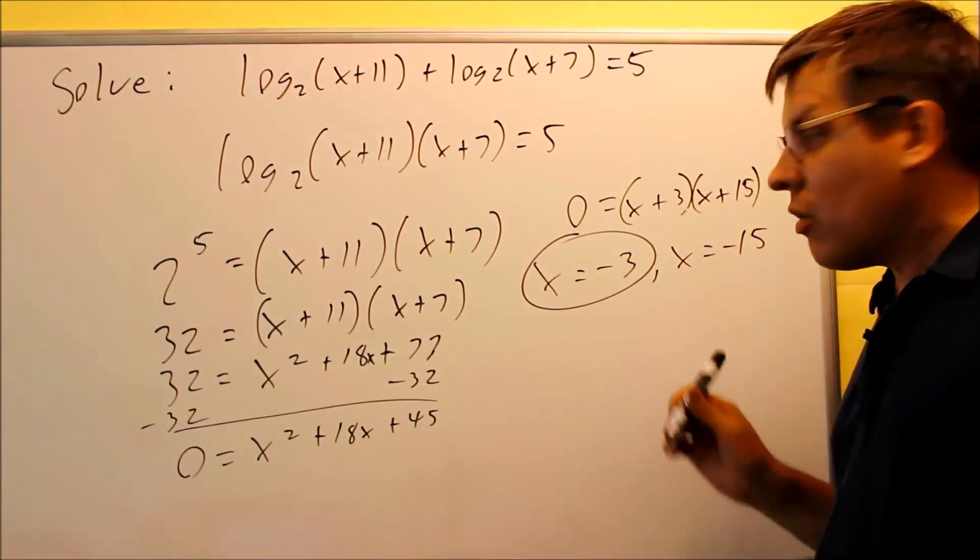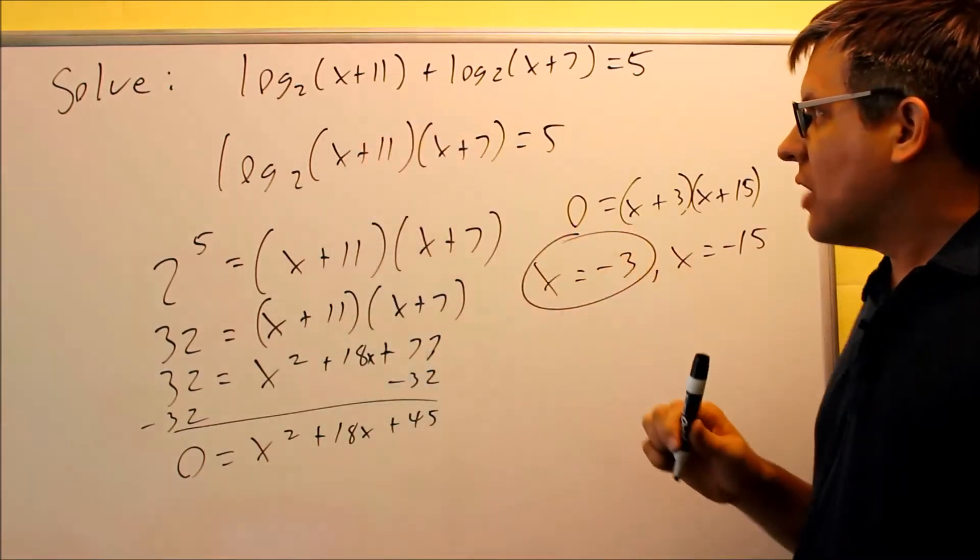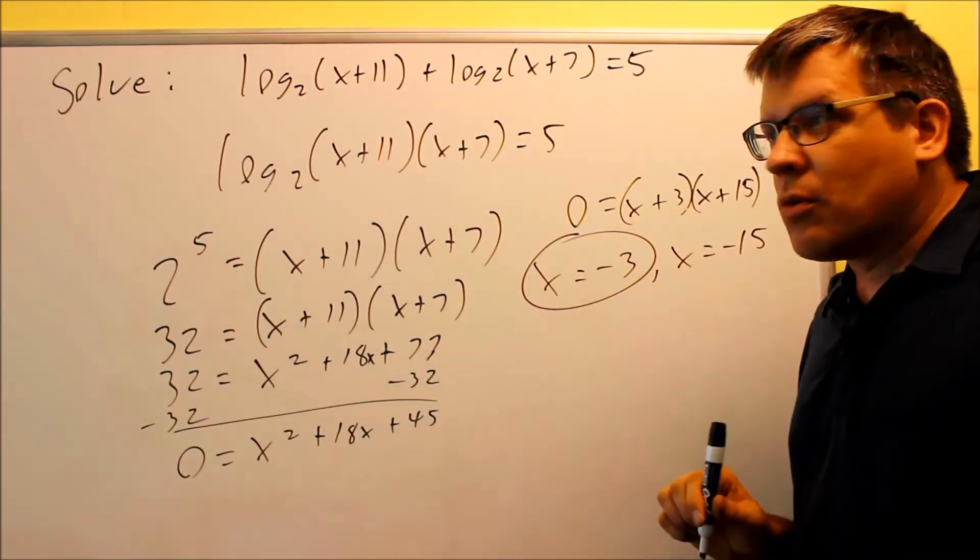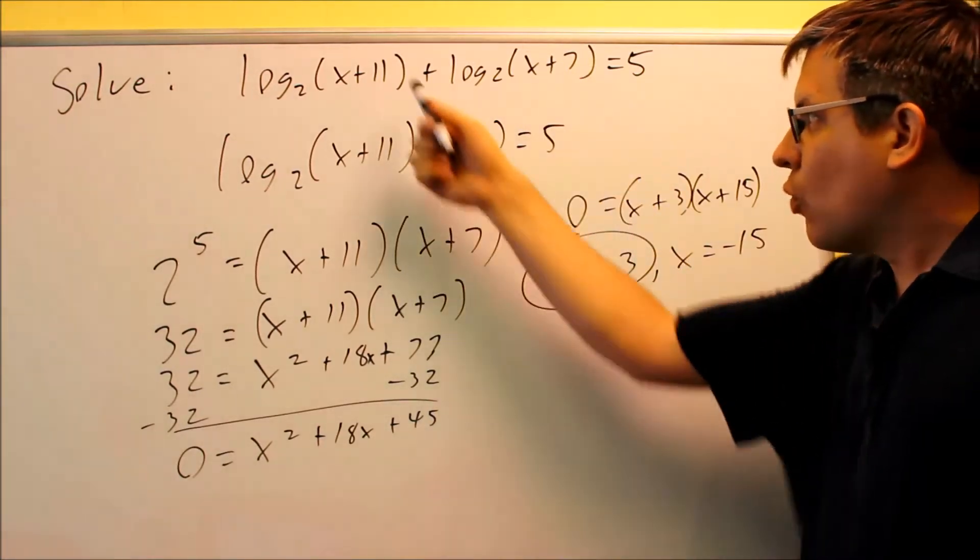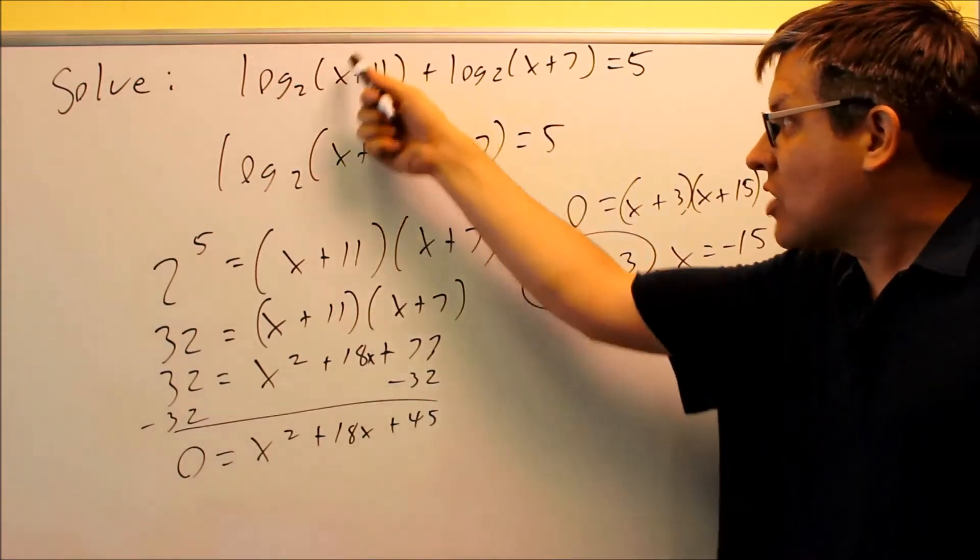We've got to check the second one as well. Negative fifteen plus eleven, that gives us a negative number, and in fact, we would even get a negative number if we put it into this one. So if even one of them gives you a negative inside the log.